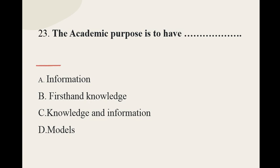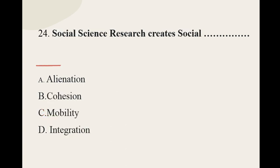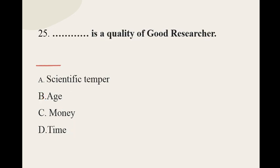Question number twenty-three: The academic purpose is to have dash — the options are: information, first-hand knowledge, knowledge and information, models. The correct option for question number twenty-three is knowledge and information. Question number twenty-four: Social science research creates social dash — the correct option for question number twenty-four is cohesion.